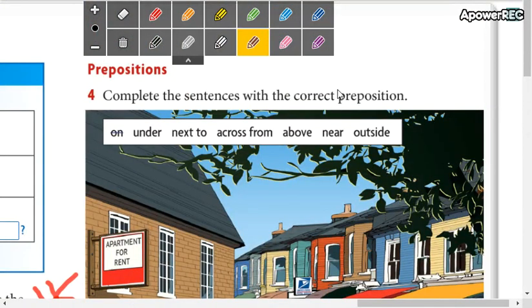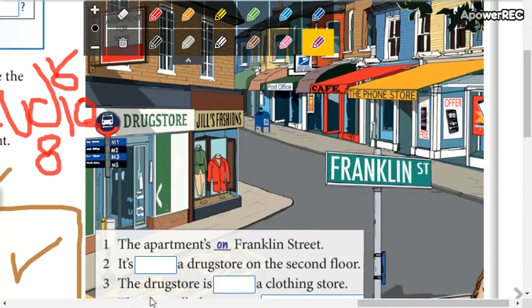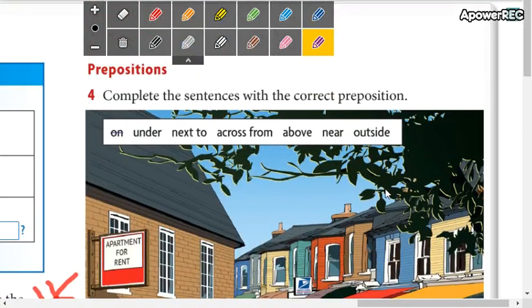Here we have more prepositions. We have the preposition on - recuerden que es sobre la calle, siempre cuando quiere decir el nombre de una calle - on Bolognese Avenue, on Bolivar Street, on the sidewalk, en la vereda. Under - debajo. Next to - al lado. Across from - en frente de, al frente de, tienen que estar frente a frente.